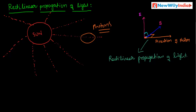Here we have to remember one thing: because of these fields, and these fields having energy, the energy required for propagation of this photon is provided by the electric field and magnetic field. For this propagation, it needs some energy, and that energy comes from the magnetic field and electric field.